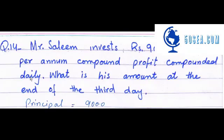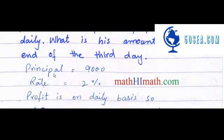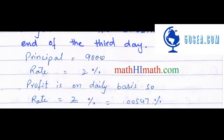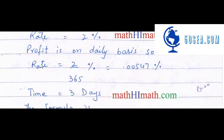So we have to calculate what the amount will be at the end of the third day. The principal amount is Rs. 9,000. The rate is 2% per annum. Because it is 2% annually, we need to convert this to a daily basis.